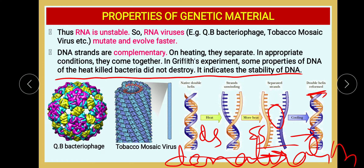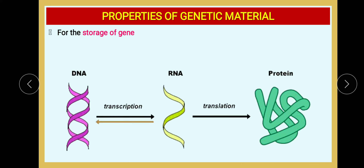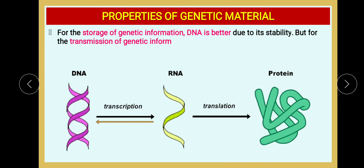RNA's drawbacks are: it mutates rapidly, it is single-stranded, and it is chemically more reactive compared to DNA. That is why nature has selected DNA as genetic material over RNA. For storage of genetic information, DNA is better due to its stability, but for transmission of genetic information, RNA is better.